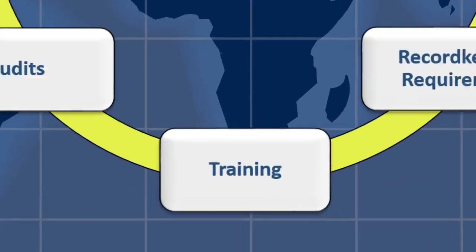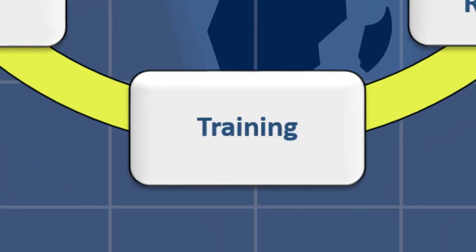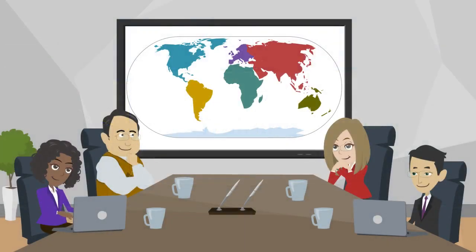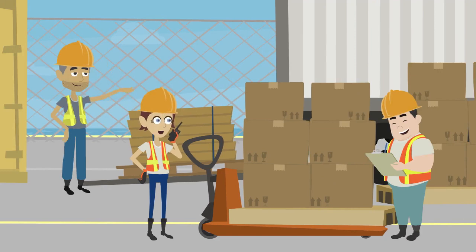Element number five is Training. Training should be job-specific so that staff members understand their responsibilities. The circular chart focuses on Training. For example, the sales department might need to be aware of which countries would require export licenses. This scene shows people sitting around a conference table with a map of the world on the wall. The shipping department might need to be aware of export clearance requirements, and never pass up an opportunity to provide training for your employees. This scene shows people moving boxes at a loading dock.